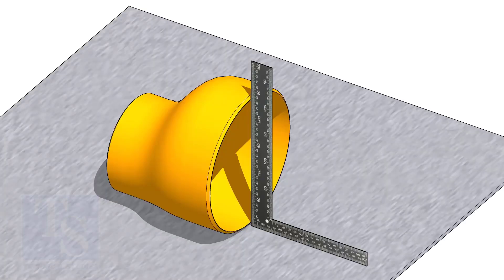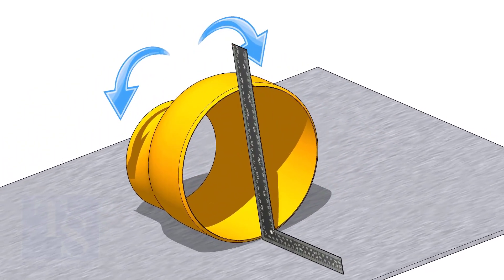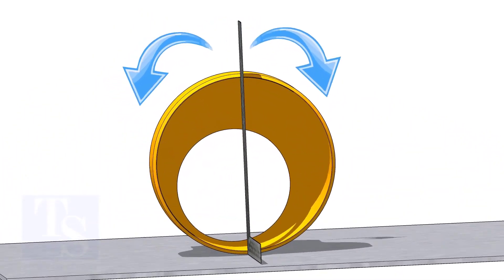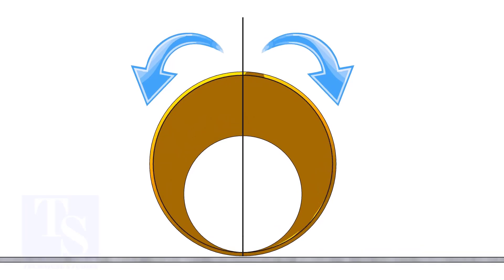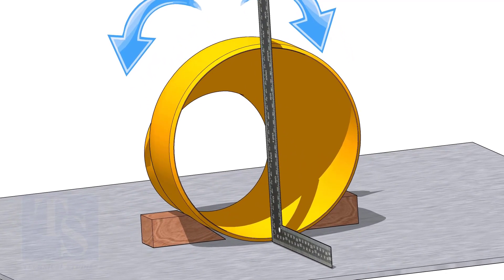Put the reducer on a straight plate. Hold a right angle at the large side of the reducer and gently rotate the reducer back and forth until the face of the reducer is square to the right angle.